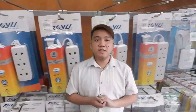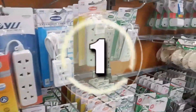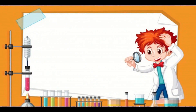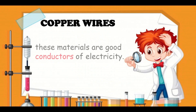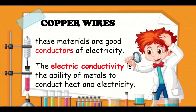Let us observe these examples. What characteristics do they share in common? Amazing! They are copper wires. These materials are good conductors of electricity. The electric conductivity is the ability of metals to conduct heat and electricity.